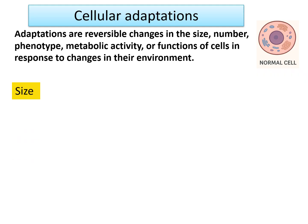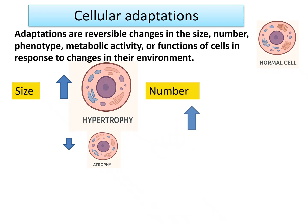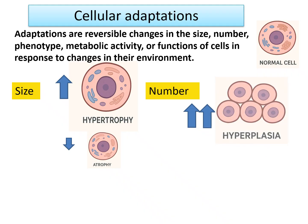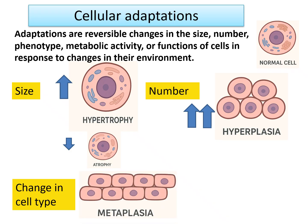In terms of size, it can be increased or decreased. When increased, we call it hypertrophy. When decreased, we call it atrophy. 'Trophy' means size; 'hyper' means increased; atrophy means decrease in size. In terms of number, the cell can accommodate by increasing its number — that is hyperplasia — or by changing its cell phenotype, which is known as metaplasia.